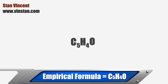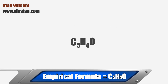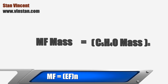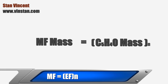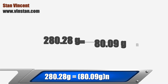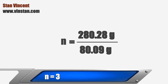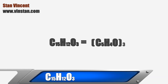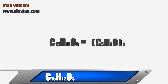From the empirical formula and the molar mass, we will now determine the actual molecular formula from the equation we saw earlier. Substituting the values in the equation, n turns out to be 3. This gives us the molecular formula of the compound: C15H12O3.